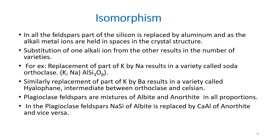Celsian is a barium feldspar with composition BaAl₂Si₂O₈. In all feldspars, part of the silica is replaced by aluminum. Because alkali metal ions are very tightly held in the crystal structure, substitution of one alkali ion for another results in various varieties. For example, replacement of part of potassium by sodium in orthoclase (KAlSi₃O₈) results in soda orthoclase, and replacement of potassium by barium results in hyalophane, intermediate between orthoclase and celsian.